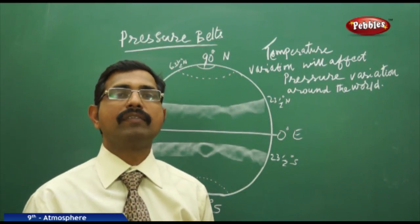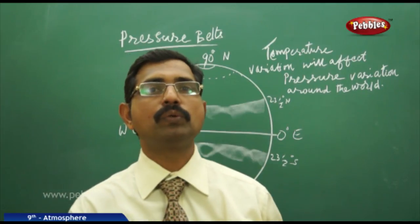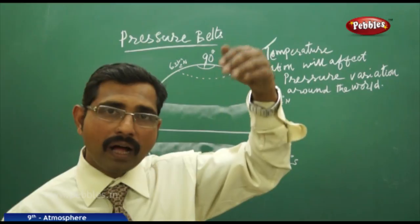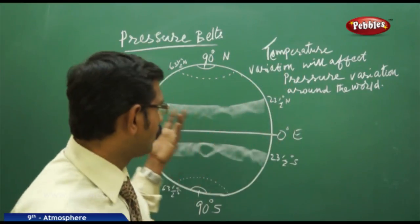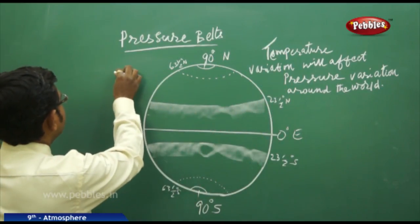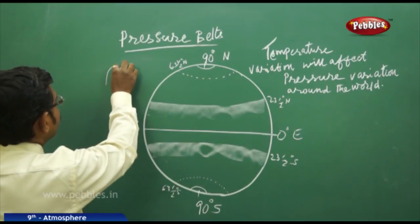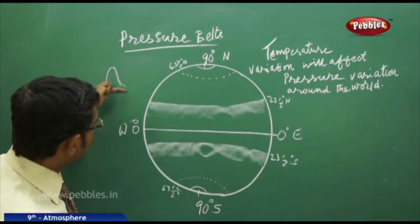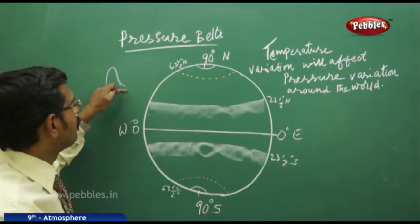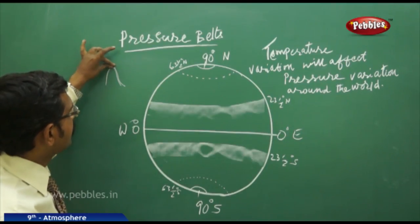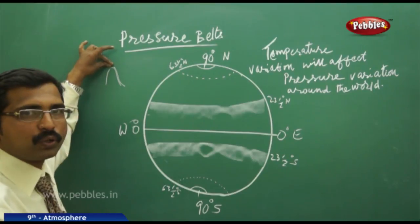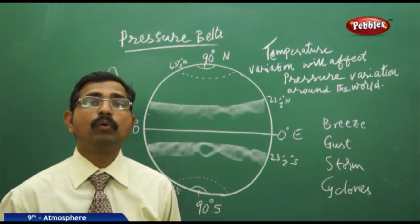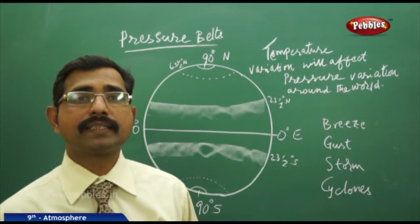Wind travels from higher pressure zones to lower pressure zones — just like water travels from higher altitudes to lower altitudes. Water falls from top to bottom; similarly, air travels from higher pressure zones to lower pressure zones. This moving air is called wind.